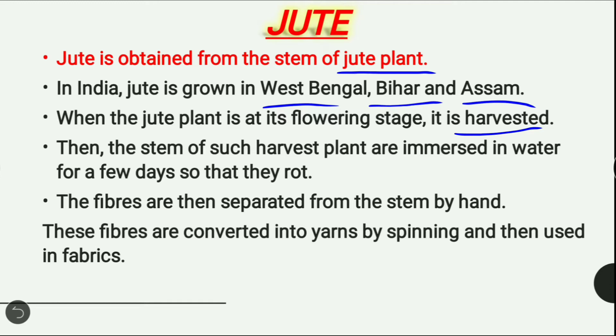Then the stems of the harvested plants are immersed in water for a few days so that they rot. The fibers are then separated from the stem by hand. Then these fibers are converted into yarns by the spinning process and then used in fabrics.